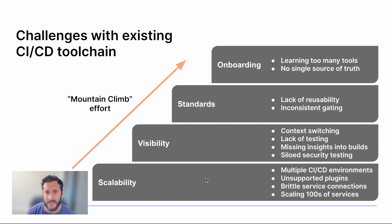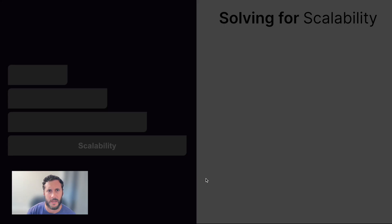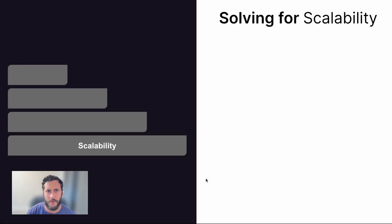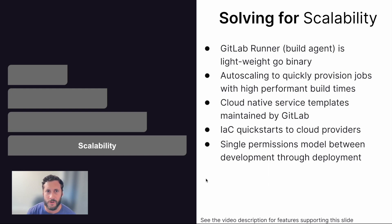So up next, let's take a look at how GitLab can help solve some of these challenges. When it comes to solving for scalability within GitLab CICD, the GitLab runner is your starting point for automating your processes. It's a lightweight agent written in Go that is easy to maintain and scale.